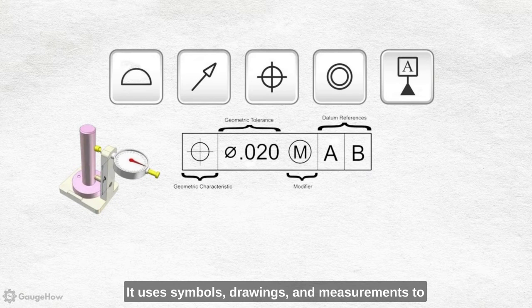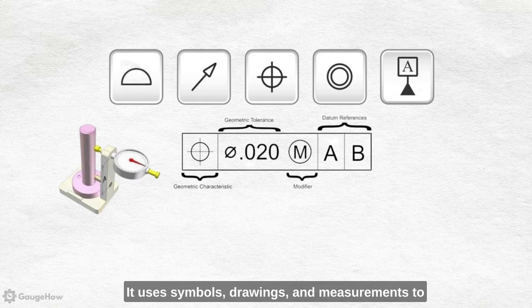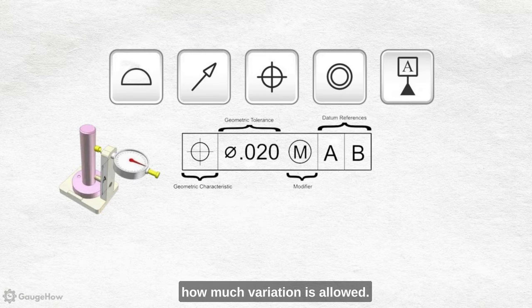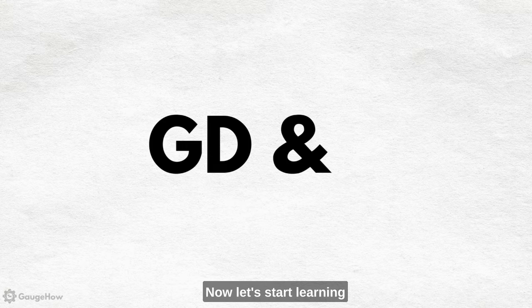It uses symbols, drawings and measurements to show how each piece should look and how much variation is allowed. Now let's start learning geometric dimensioning and tolerancing.